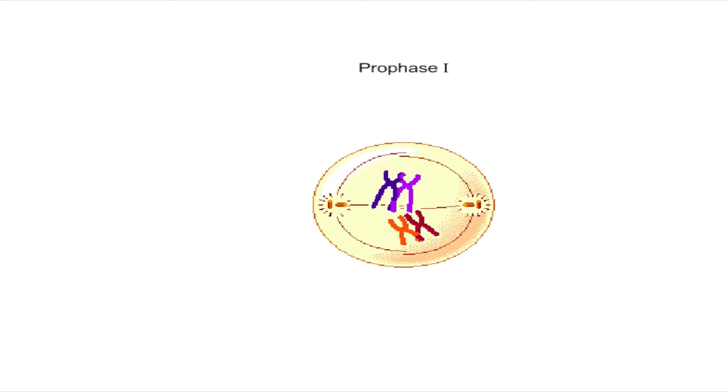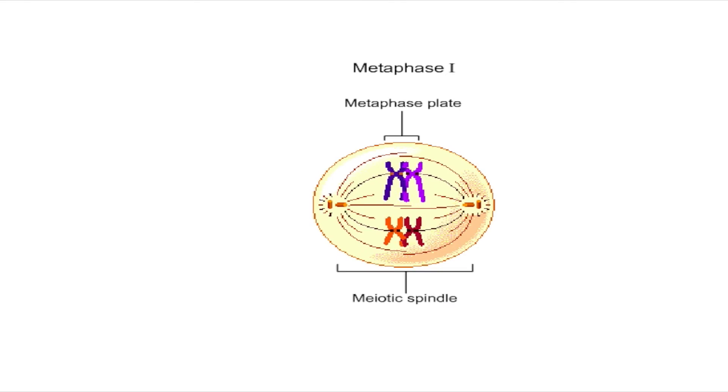By metaphase one, the nuclear envelope has completely disappeared. The centrosomes are at opposite poles of the cell and the microtubules are attached to the kinetochores of the homologues. The homologues now become aligned on a plane equidistant from the poles, called the metaphase plate.